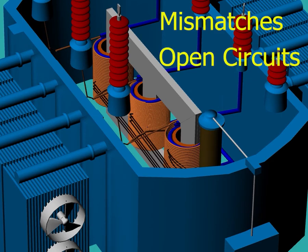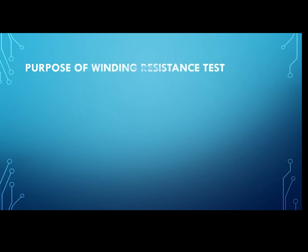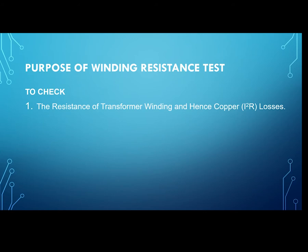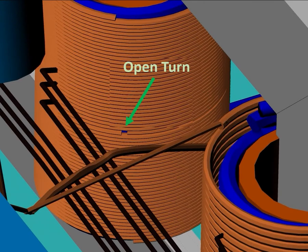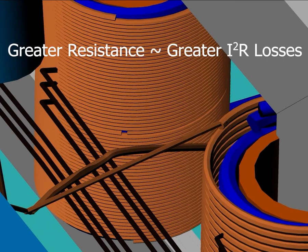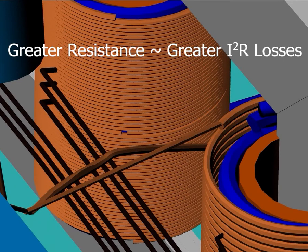So what is the purpose of the winding resistance test? To check the resistance of the transformer winding and hence copper losses, which are also called I²R losses. Quality and condition of windings, loose joints and poor connections, broken strands in winding conductor, and any open turn in the winding. Greater resistance means greater I²R losses.